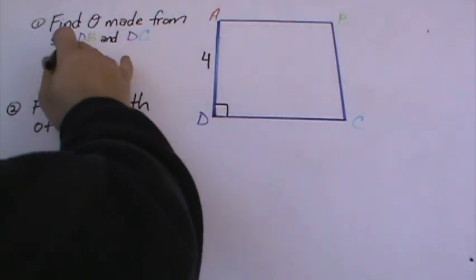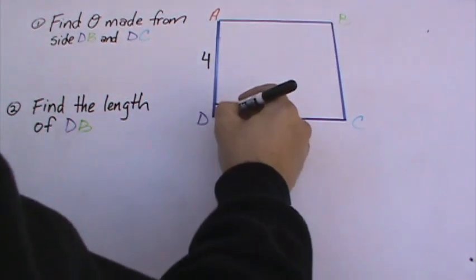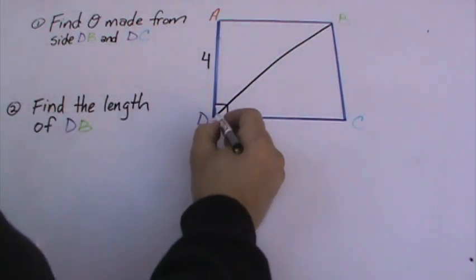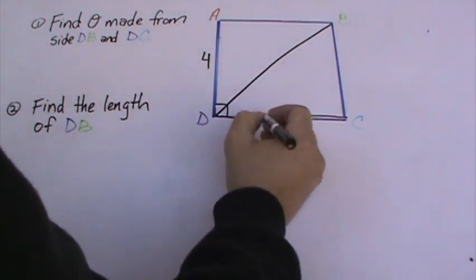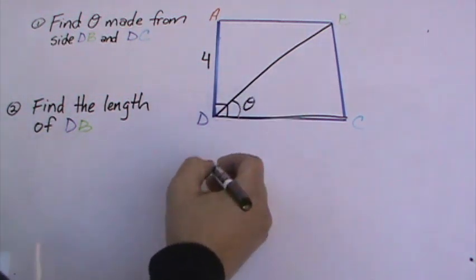Find theta made from side DB. So let's find D and B, so they're talking about this, and DC, and this. So they're asking about this angle right here, which is your theta.